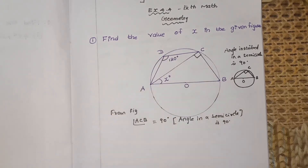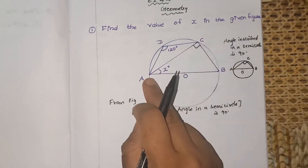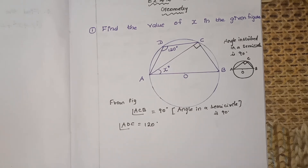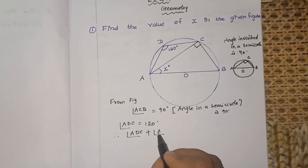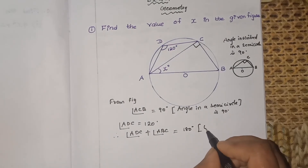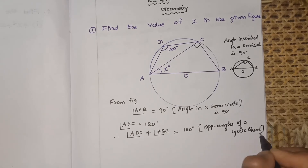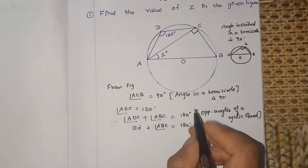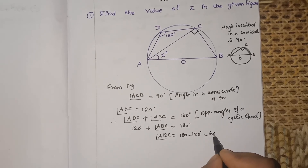Next, using the cyclic quadrilateral property: B and D are opposite angles of the cyclic quadrilateral. Angle ADC is given as 120 degrees. Therefore, angle ADC + angle ABC = 180 degrees, because opposite angles of a cyclic quadrilateral are supplementary. So angle ABC = 180 − 120 = 60 degrees.